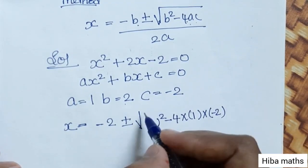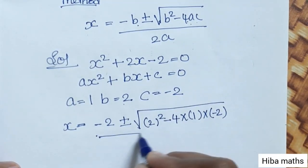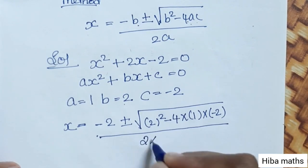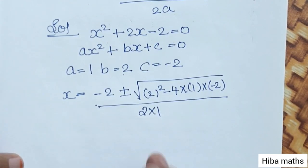c value minus 2, divided by 2 into a, 2 into 1. Now we will solve it.